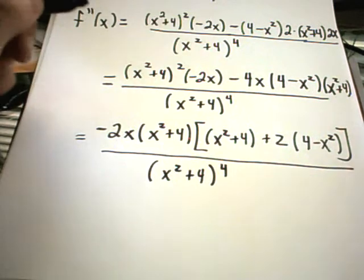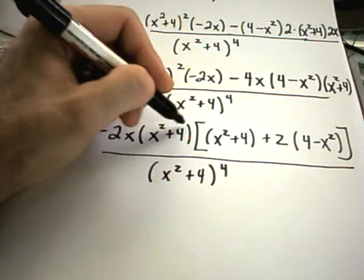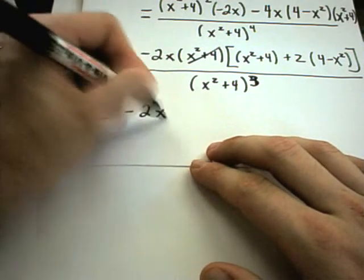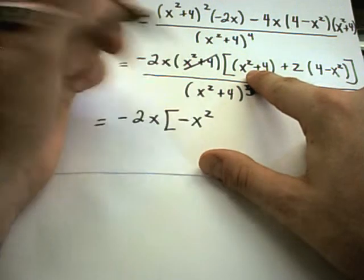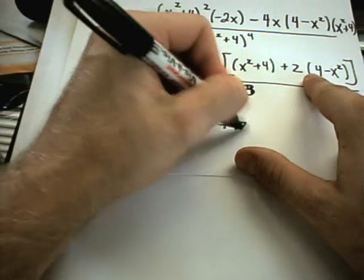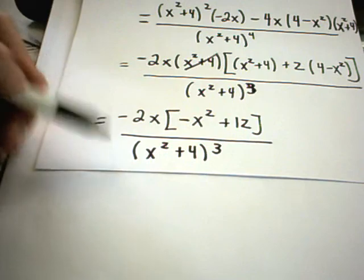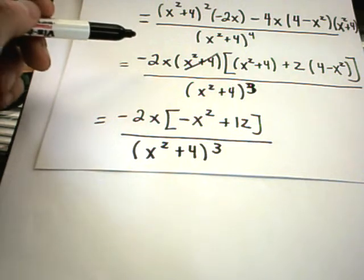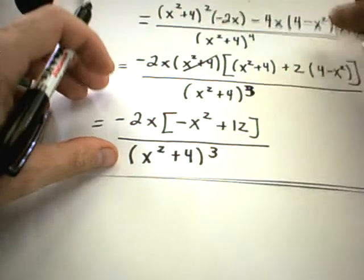After canceling one x squared plus 4 from the numerator with one from the denominator, I'll be left with the power of 3 on the bottom. So I've got negative 2x on top, and simplifying inside the parentheses: negative 2x squared plus x squared gives a negative x squared term; plus 4 and plus 8 gives plus 12. So the second derivative is negative 2x times negative x squared plus 12, all over x squared plus 4 to the third. You don't have to do all this simplification — it's good algebra practice, but on an exam, if you don't need to, don't do it.